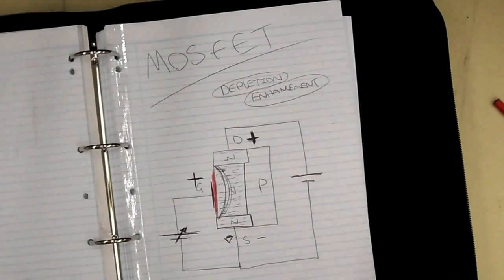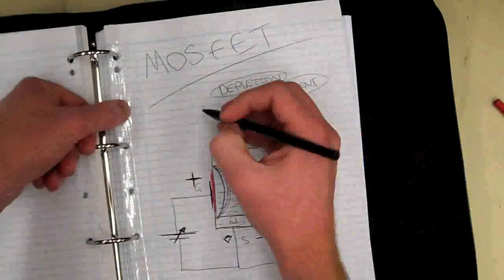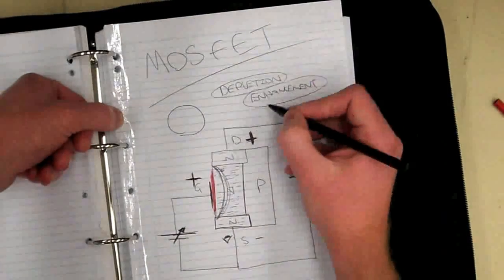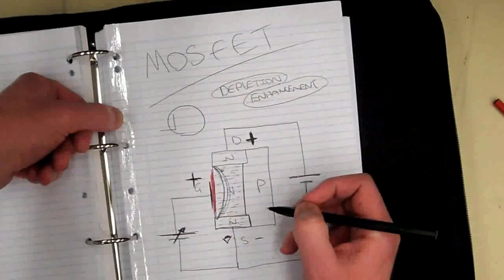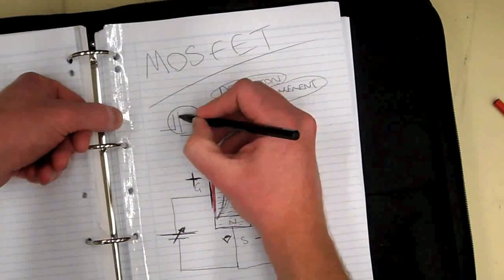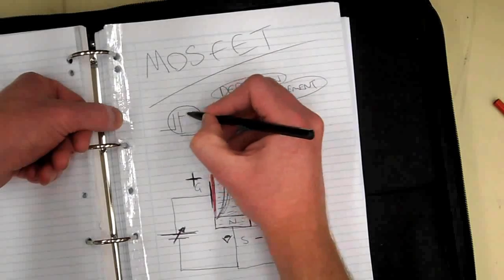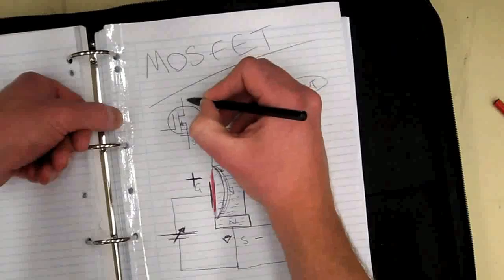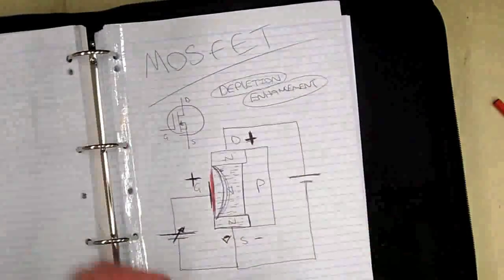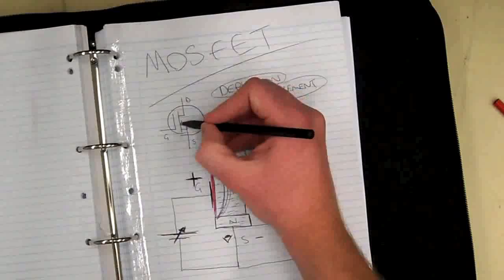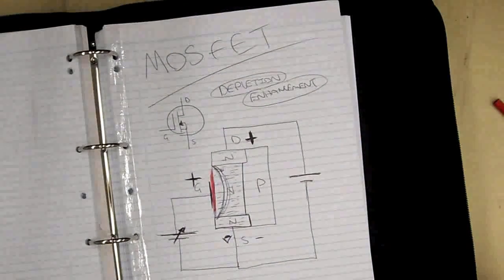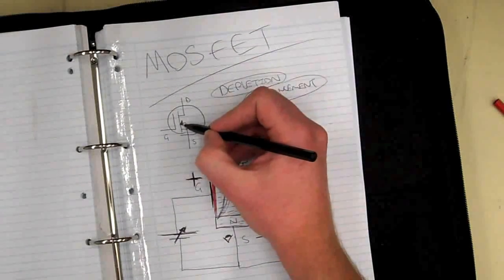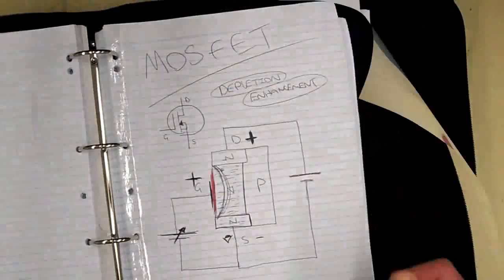Something I haven't covered yet is the circuit symbols. The circuit symbol for a Depletion Enhancement MOSFET has a gate, a source, and a drain. For an N-channel, the arrow points in towards the channel. The only difference between the N and P channel is that with a P channel, the arrow points the other way.